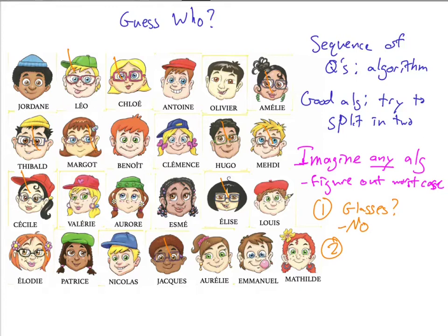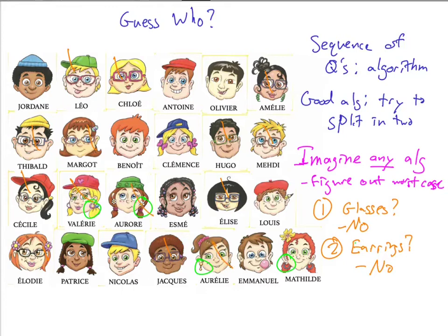Out of those left, we count how many have earrings. Pigtails don't count as earrings. Valerie has earrings, Aurora has earrings, Esme does not, Louis and Patrice don't, but Aurélie does. Out of the 14 remaining, we have four that have earrings. So we would answer 'no' to this earrings question as well. That eliminates those four people only, but still leaves 10. Every time we're answering in a way that leaves the most number of possibilities — the answer is just based on what's going to leave the most number of remaining possibilities.